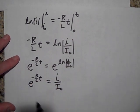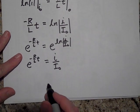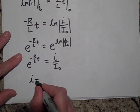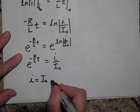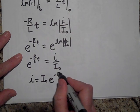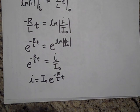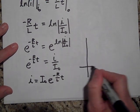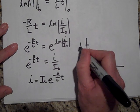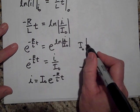And so I is equal to I naught e to the negative R over L times t. Okay, if I were to graph this, then it's going to graph like this. That's a decay graph. It's decaying like that.